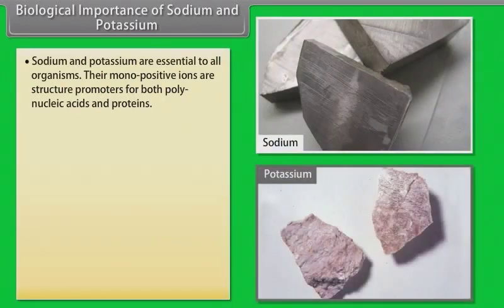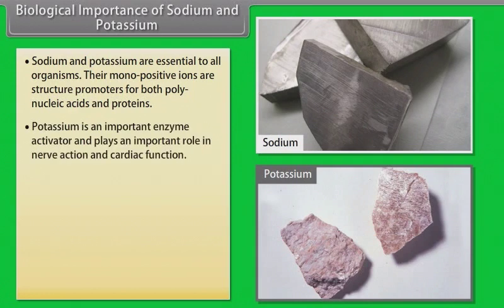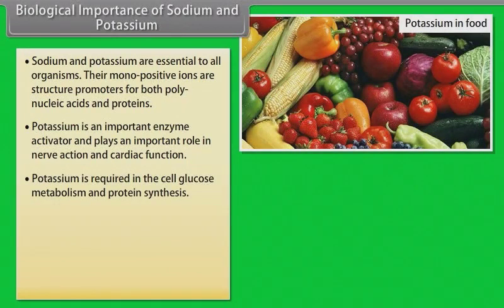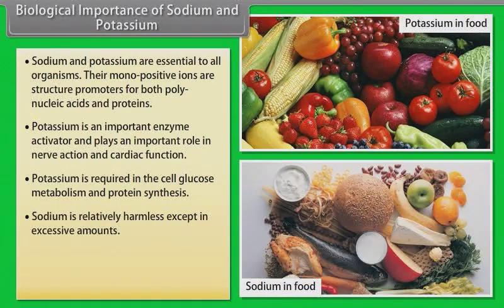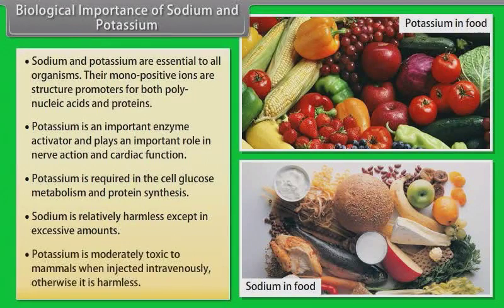Biological importance of sodium and potassium. Sodium and potassium are essential to all organisms. Their monopositive ions are structure promoters for both polynucleic acids and proteins. Potassium is an important enzyme activator and plays an important role in nerve action and cardiac function. Potassium is required in the cell glucose metabolism and protein synthesis. Sodium is relatively harmless except in excessive amounts. Potassium is moderately toxic to mammals when injected intravenously. Otherwise, it is harmless.